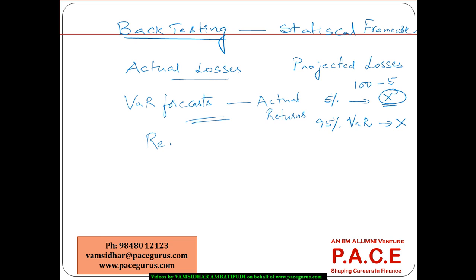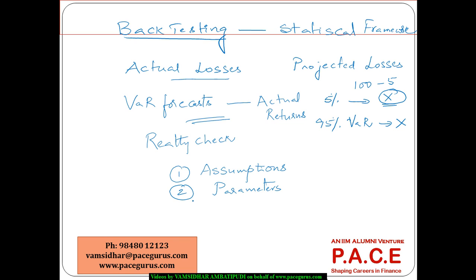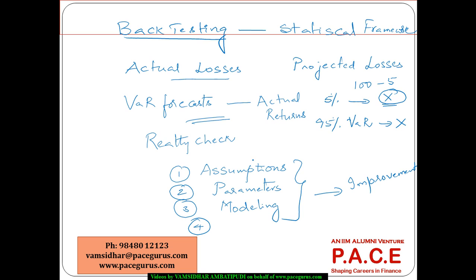Backtesting is primarily doing a reality check on the computed VAR, to make sure whether the model is well designed. If the model is faulty, we can examine whether the assumptions have problems, whether the parameters chosen have issues, or whether they were estimated incorrectly. The modeling process and calculations can be re-examined, which can result in consistently improving the model. So backtesting also helps in model improvement.